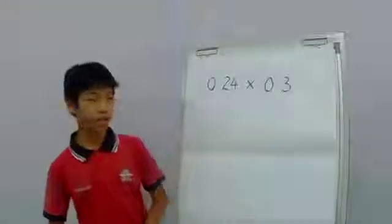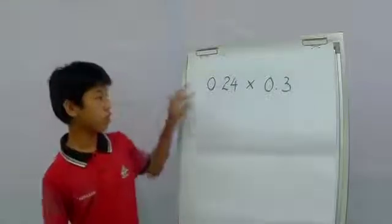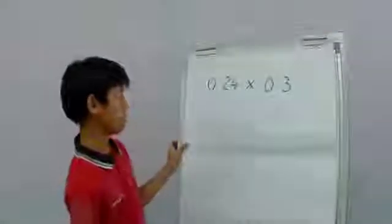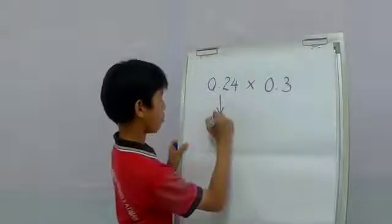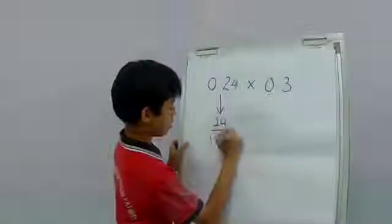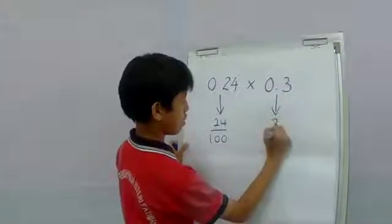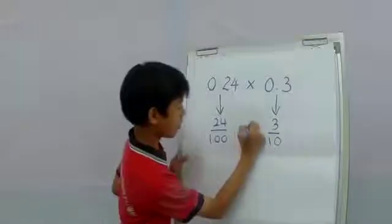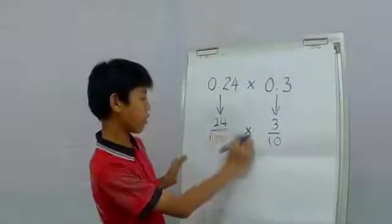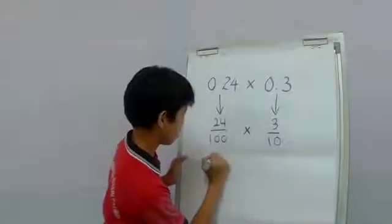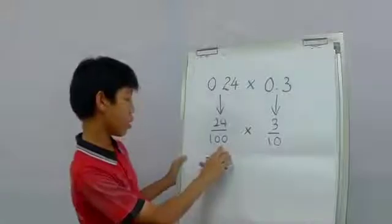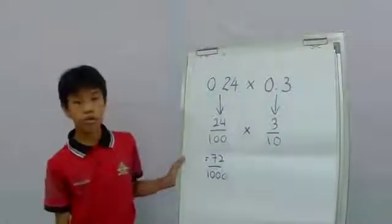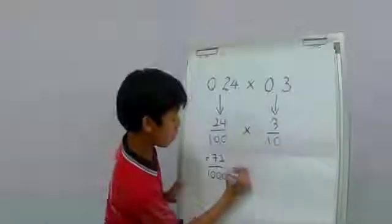Now I know a method to solve multiplication of decimals. Let me show you. In order to solve multiplication of decimals like this, first I'm going to convert both decimals into fractions. So 0.24 will become 24 over 100, and 0.3 will become 3 over 10. Therefore, 24 over 100 times 3 over 10 — we multiply the numerators: 24 times 3 equals 72. And we multiply the denominators: 100 times 10 equals 1,000. So 72 over 1,000, which in decimal form is 0.072.